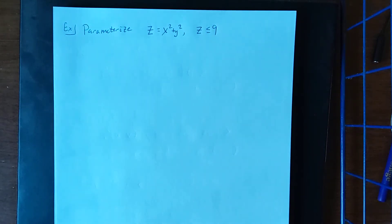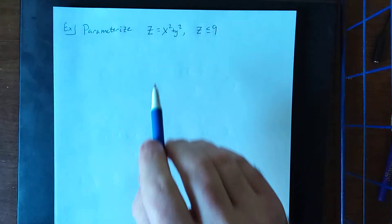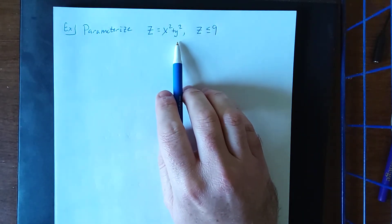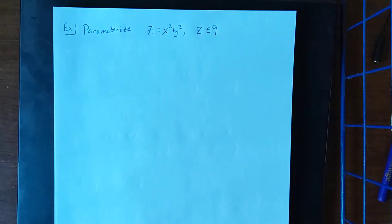In this example I'd like to talk about how to parameterize a given surface. The given surface is this elliptic paraboloid z equals x squared plus y squared with z being less than or equal to 9.